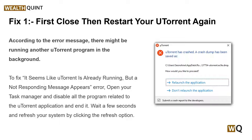Open your Task Manager and end all processes related to the uTorrent application. Wait a few seconds and refresh your system by clicking the refresh option. Then launch your uTorrent client application and try downloading the file again. If the error persists, move on to the next step.